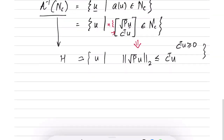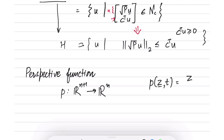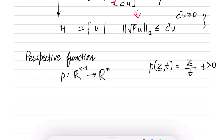Let us look at another type of transformation: the perspective function transformation. The perspective function P maps R^(n+1) to R^n. The input is (n+1)-dimensional but the output is n-dimensional. The perspective function of (z, t) is defined as z/t for t > 0. Here z is in R^n and t is in R. The domain of P is R^n × R++, because we only allow t > 0.